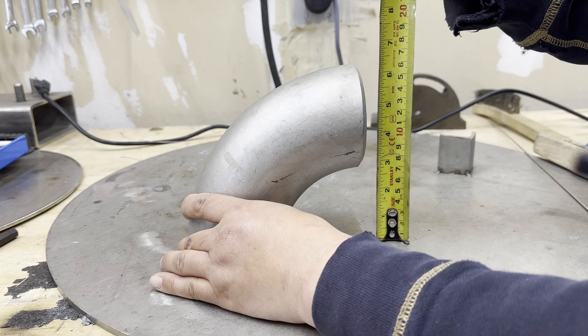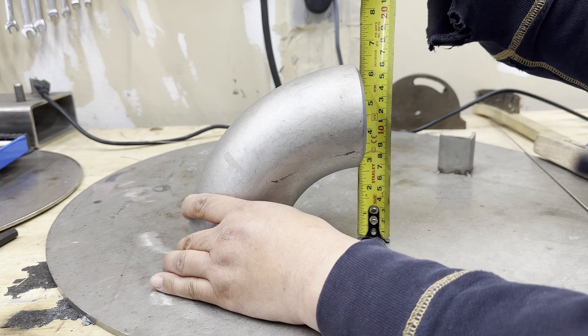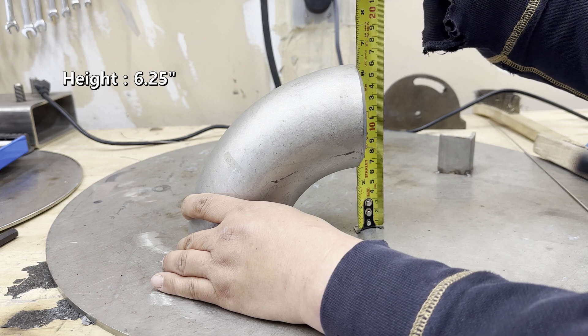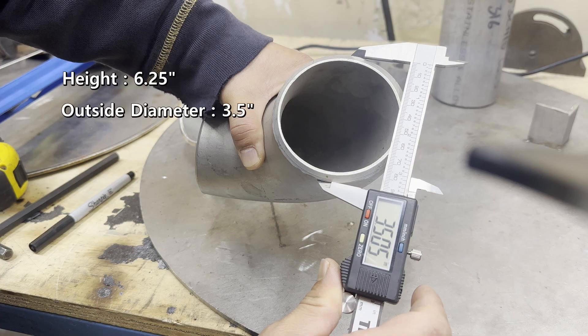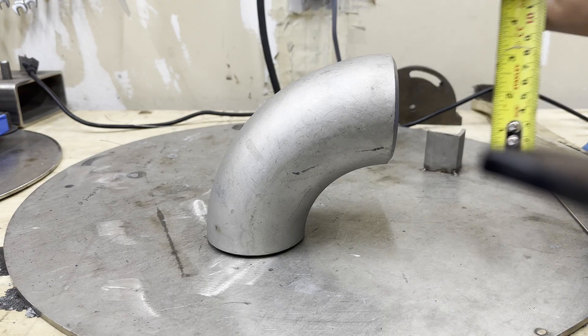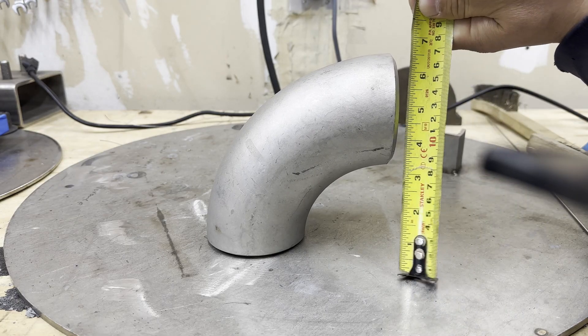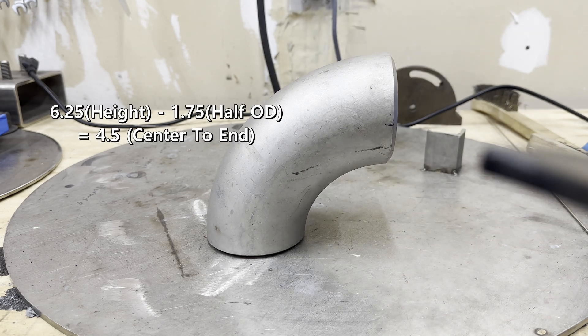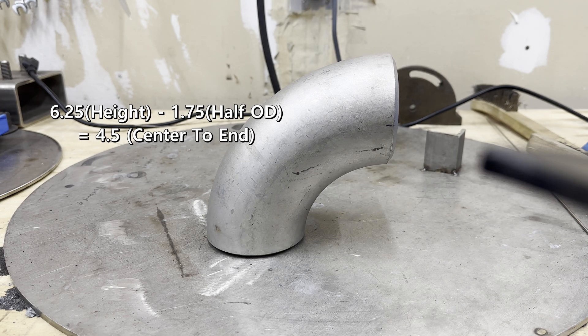There are two ways to figure out this dimension. Take the actual measurement. First, measure 3-inch elbow height. It is 6 and a quarter. Second, measure outside diameter. It is 3 and a half. Third, calculate half outside diameter. It is 1 and 3 quarters. Now, you can get the measurement from center-to-end.